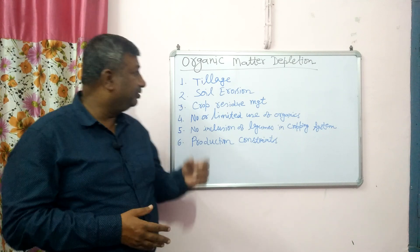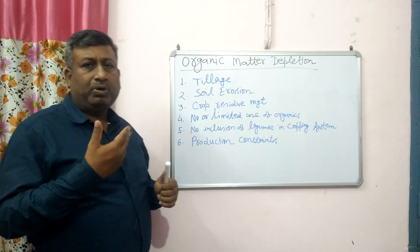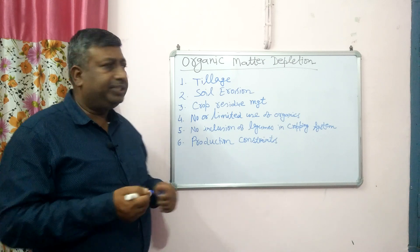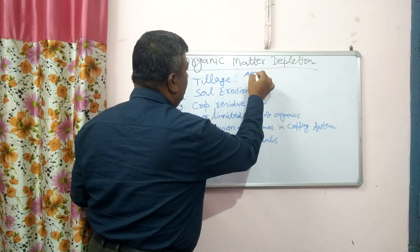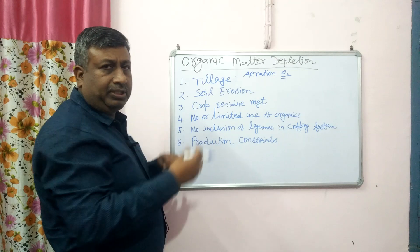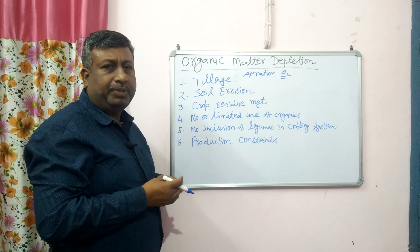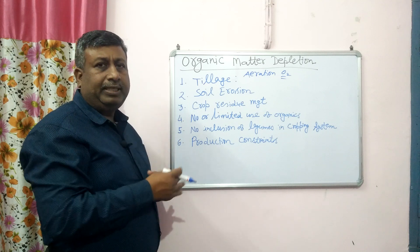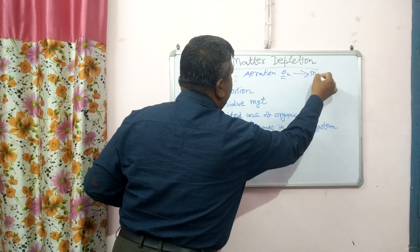One important practice is tillage — specifically conventional tillage, where we go for one deep plowing and two to three cross harrowings or five harrowings. As we go for tillage, this tillage operation creates aeration or oxygen supply into the soil. The soil is turned, there is churning of soil, and this tillage process is important for seedbed preparation, but excess tillage disturbs the soil and maintains increased oxygen supply.